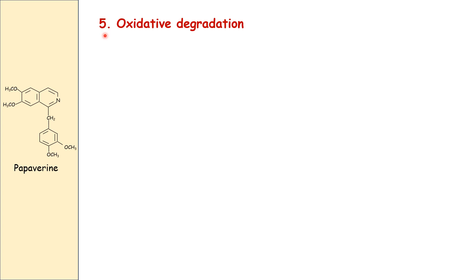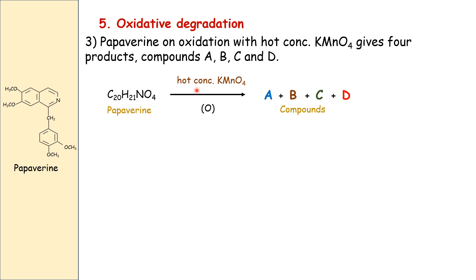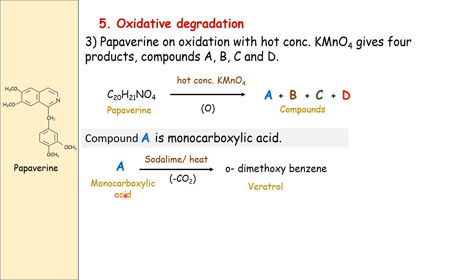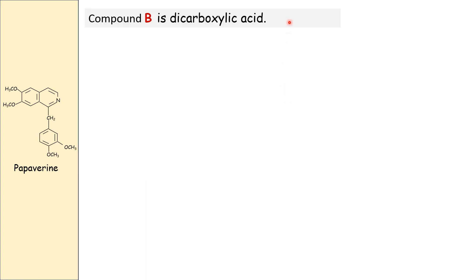Oxidative degradation reactions: papaverine on oxidation with hot concentrated KMnO4 gives four products — A, B, C, and D. Compound A is a monocarboxylic acid. When compound A is treated with soda lime, decarboxylation takes place and we get ortho-dimethoxybenzene, known as veratrol. Therefore compound A is veratric acid, a monocarboxylic acid which upon decarboxylation gives ortho-dimethoxybenzene. Compound B is a dicarboxylic acid.